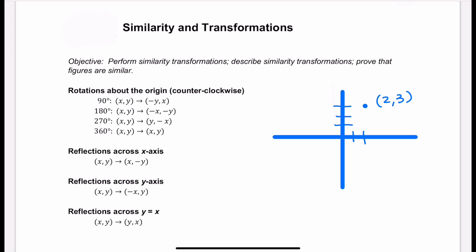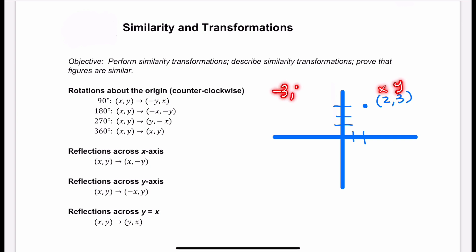First let's talk about a rotation. A rotation is where we rotate things counterclockwise about the origin. So if it says a 90 degree rotation, we're going to be moving counterclockwise around the origin — the origin is at the center, zero zero. What we do is flip the coordinates so that x, y becomes negative y, x. So if I have point (2, 3), my negative y, x would be negative 3 comma 2.